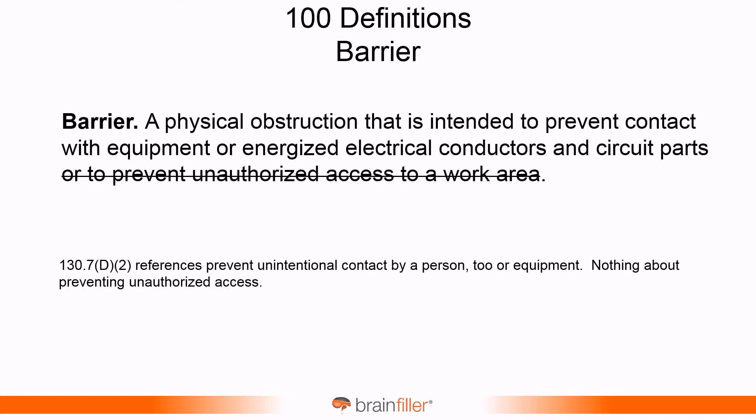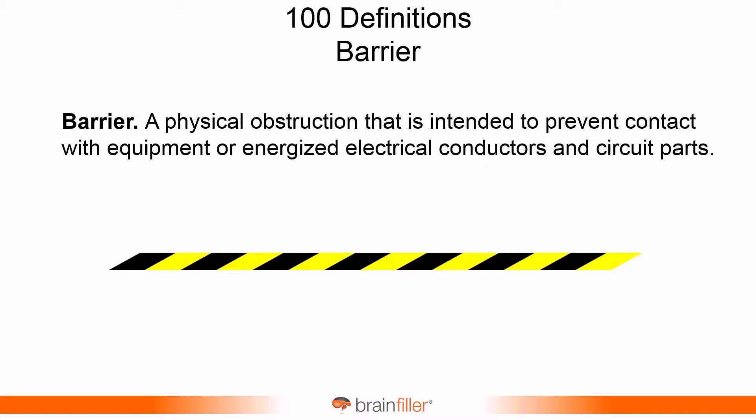The definition of 'barrier' was also changed to align with other references within NFPA 70E. The previous wording ended with 'to prevent unauthorized access to a work area,' which wasn't really what a barrier is about. It's about preventing contact with equipment or energized electrical conductors. So the definition for barrier now states it's an obstruction intended to prevent contact with equipment or energized conductors and circuit parts.